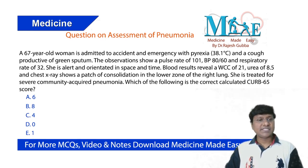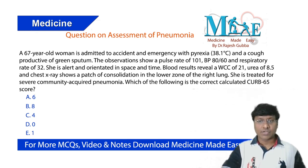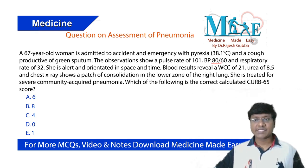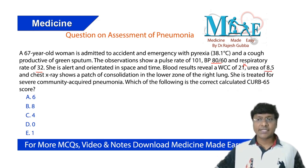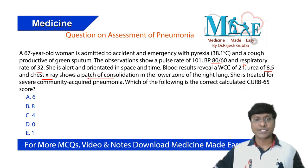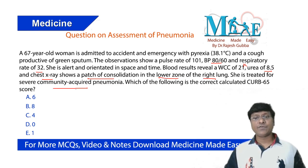A 67-year-old woman is admitted to the emergency with pyrexia and cough productive of green-colored sputum. On examination, pulse rate is 101 per minute, blood pressure is 80 by 60, and respiratory rate is 32. She is alert and oriented. The complete blood picture shows a WBC count of 21,000 per cubic millimeter, and urea is 8.5 millimoles per litre. Chest X-ray shows a patch of consolidation in the lower zone of the right lung.